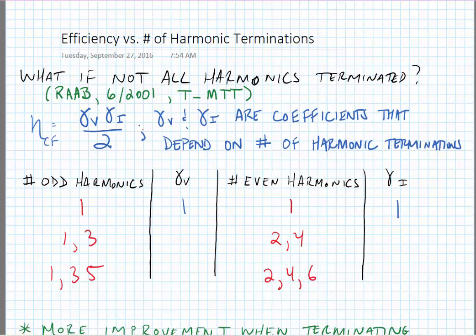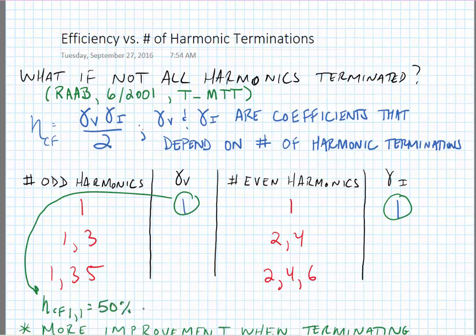In the analysis, if we were to not terminate any harmonics other than the fundamental, we would be left with gamma_V and gamma_I both equal to one. If we find the efficiency in that case, eta_CF(1,1) is equal to 50%, and this looks like a class A amplifier.